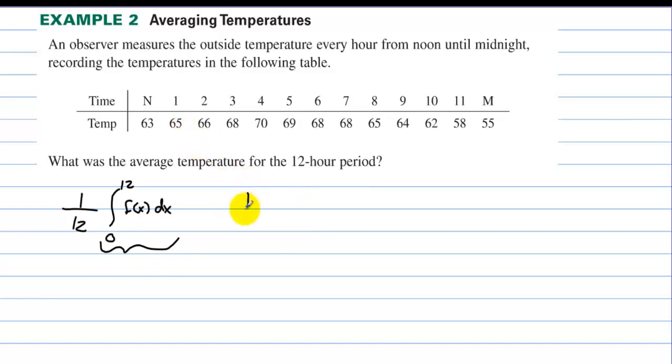The h is 1, 1 hour over 2, times, and then the temperature, this is all the y values. So we have 63, plus 2 times 65, plus 2 times 66, plus keep on going, and the last one will be plus 55. Let's use our calculator to get the approximation of the area.